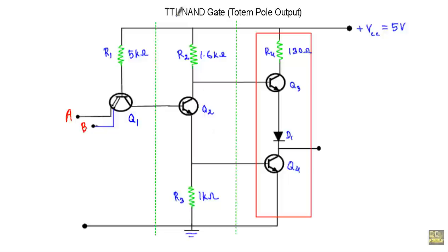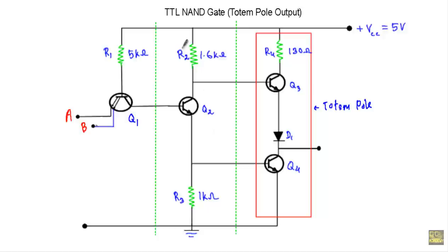In this video, I will show you the operation of a TTL NAND gate with totem pole output structure. As the circuit is a NAND gate, if any of the inputs is at logic zero, our output will be one, and for one-one input, our output will be zero.